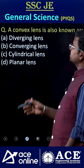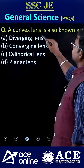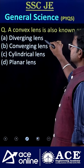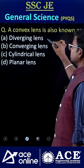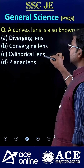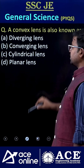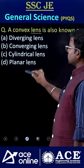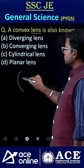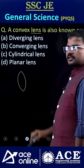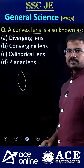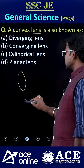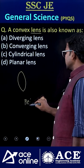Welcome to ACE Online. A convex lens is also known as a converging lens. If you consider a convex lens, it looks like this. The name of the phenomenon involved here is refraction.